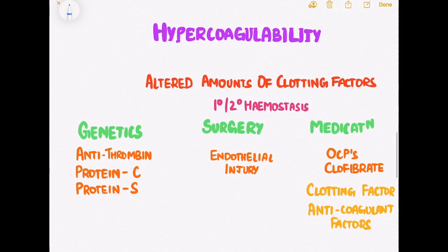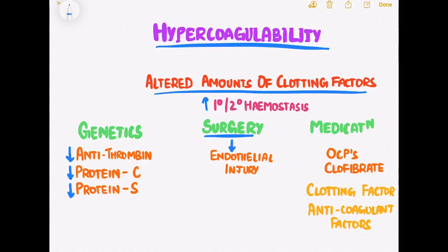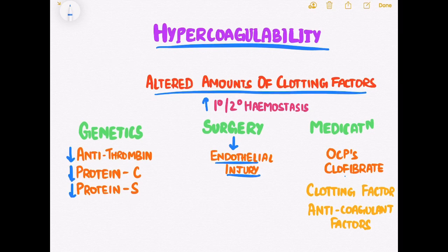The final factor that leads to development of deep vein thrombosis is hypercoagulability. In this state, altered amounts of clotting factors increase primary or secondary hemostasis. It can be observed in hereditary conditions where there is deficiency of antithrombin, protein C, and protein S. It can also be observed during various surgical interventions with endothelial injury. Normal medications such as oral contraceptives and clofibrate also aggravate hemostasis by increasing clotting factors and decreasing anticoagulant factors.